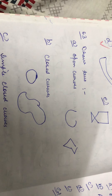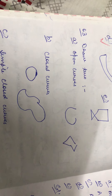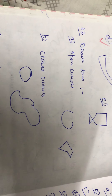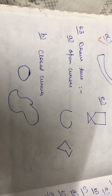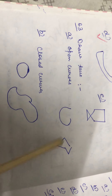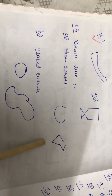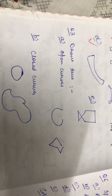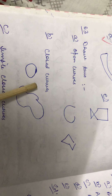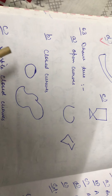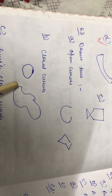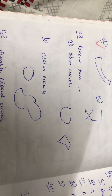Third question is: draw 2 open curves. An open curve is one whose initial and final points are not same. So I have drawn like this — you can draw based upon your own thinking. For 2 closed curves, a circle is the best example of a closed curve. Next we have another closed curve like this.